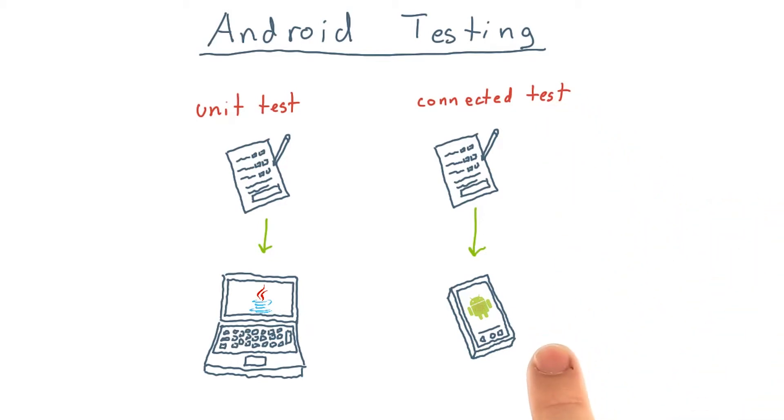Connected tests should be reserved for testing logic that depends on Android APIs or for more high-level testing like integration and functional tests. Remember, connected tests are packaged as an APK that will be installed on an Android device or emulator, so there's typically more overhead involved in their execution.